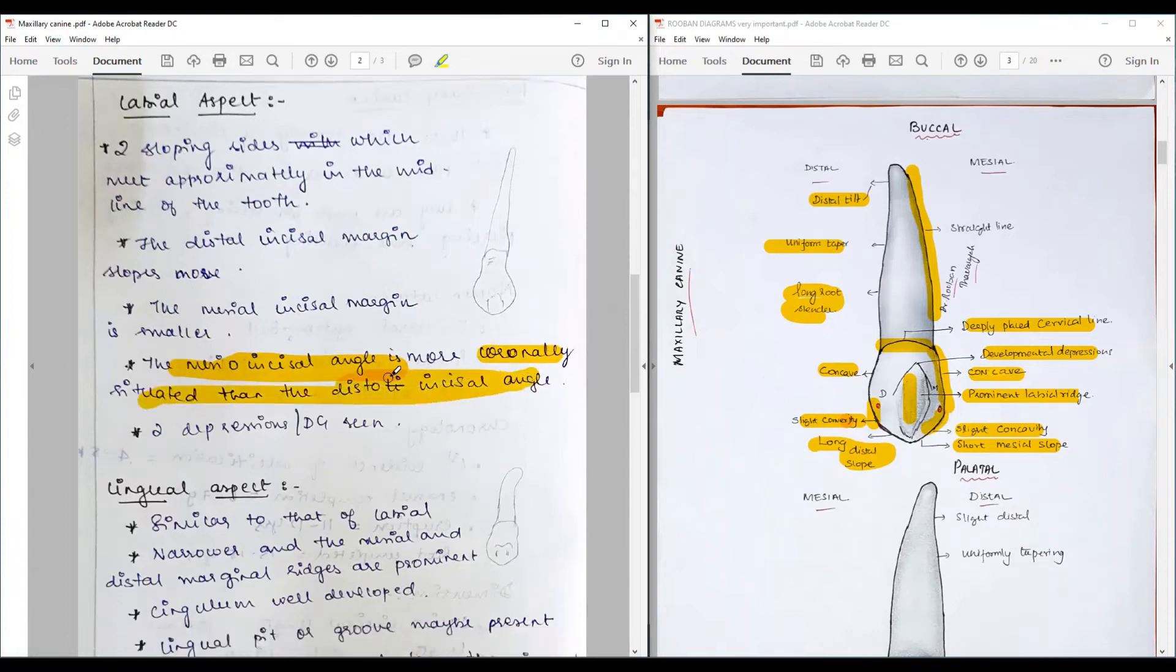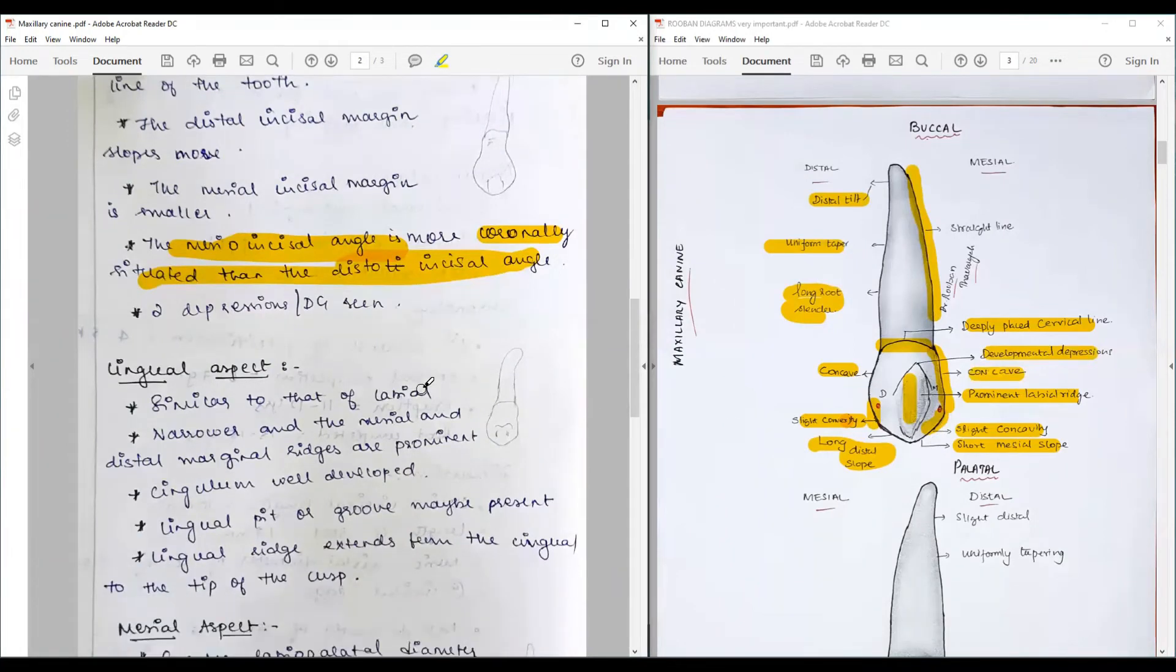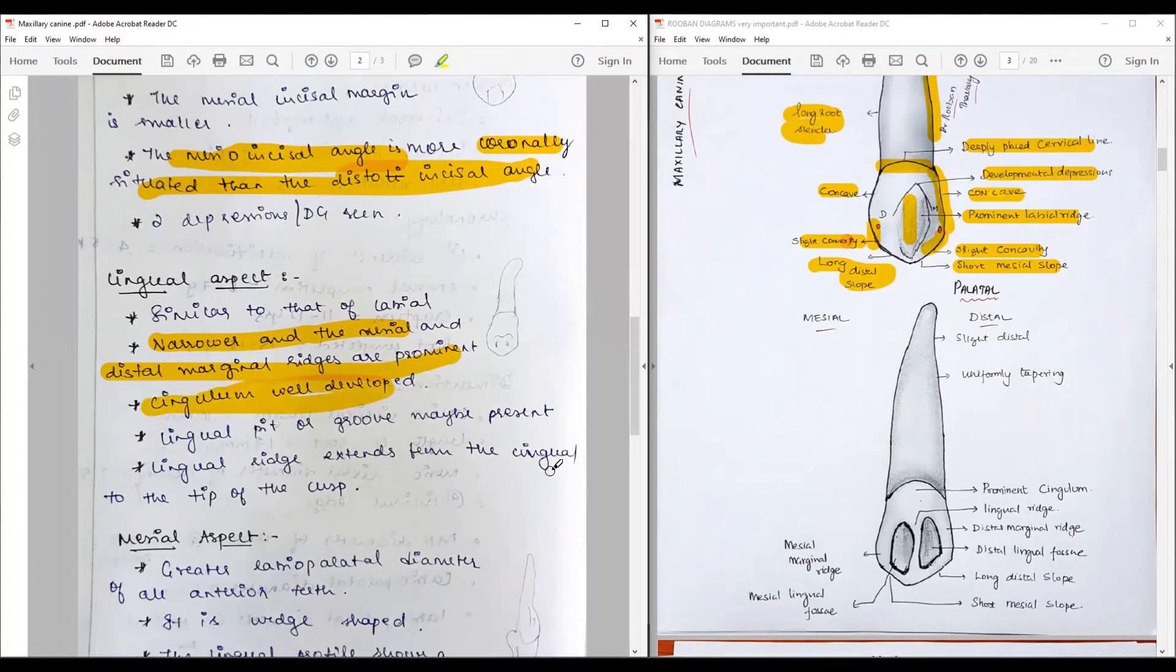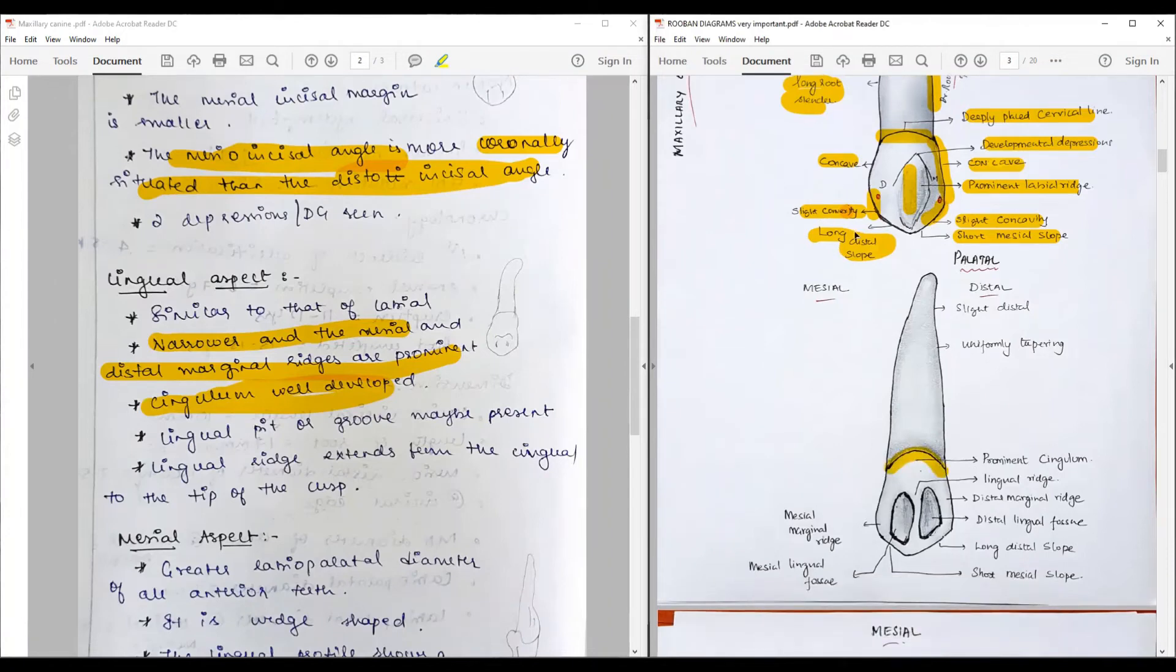The palatal or lingual aspect is similar to labial but narrower. Mesial marginal and distal marginals are prominent. We have a prominent cingulum in the cervical third with grooves. From the palatal aspect, we have mesial and distal surfaces seen. We have a deeply placed cervical line. Along the mesial lower, the same concept of initial concave, slight concavity, short mesial slope is there, but the marginal ridges are very prominently seen. The mesial marginal ridges and distal marginal ridges unite via short mesial slope and a long distal slope.